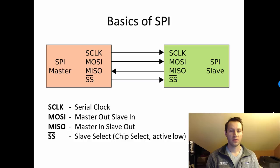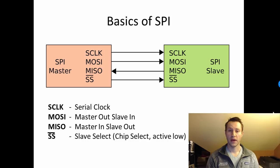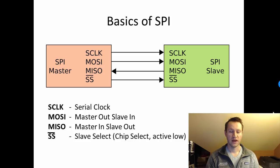In general, interfaces that have clocks can generally go faster. UART usually tops out around one megabit per second. SPI can go faster than that — 16 megahertz, 32 megahertz — it can definitely go faster.